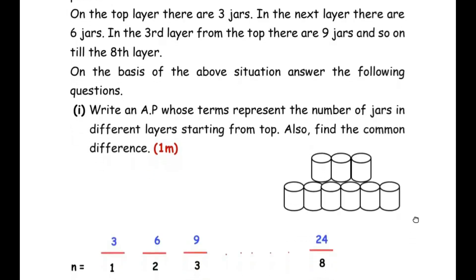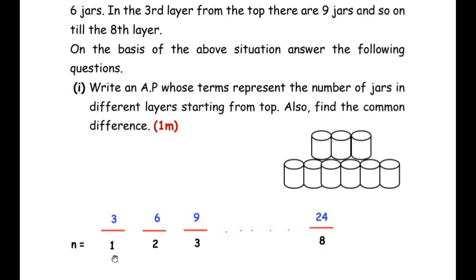Here n represents the number of layers: first, second, third, and so on up to eight layers. In the first layer we had three glass jars, in the second layer six, in the third layer nine, and in the eighth layer we have 24 glass jars. We get 24 because 1×3=3, 2×3=6, 3×3=9, so 8×3=24.